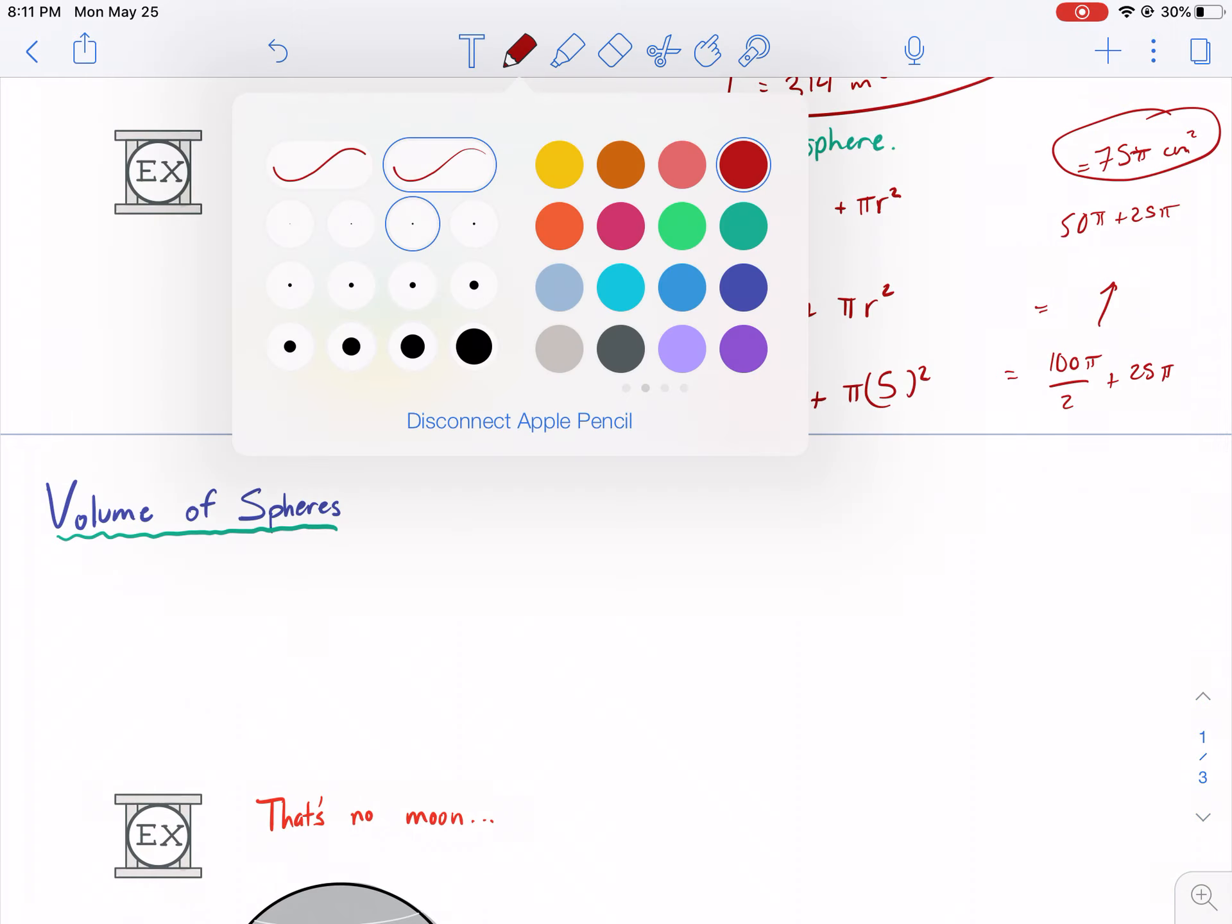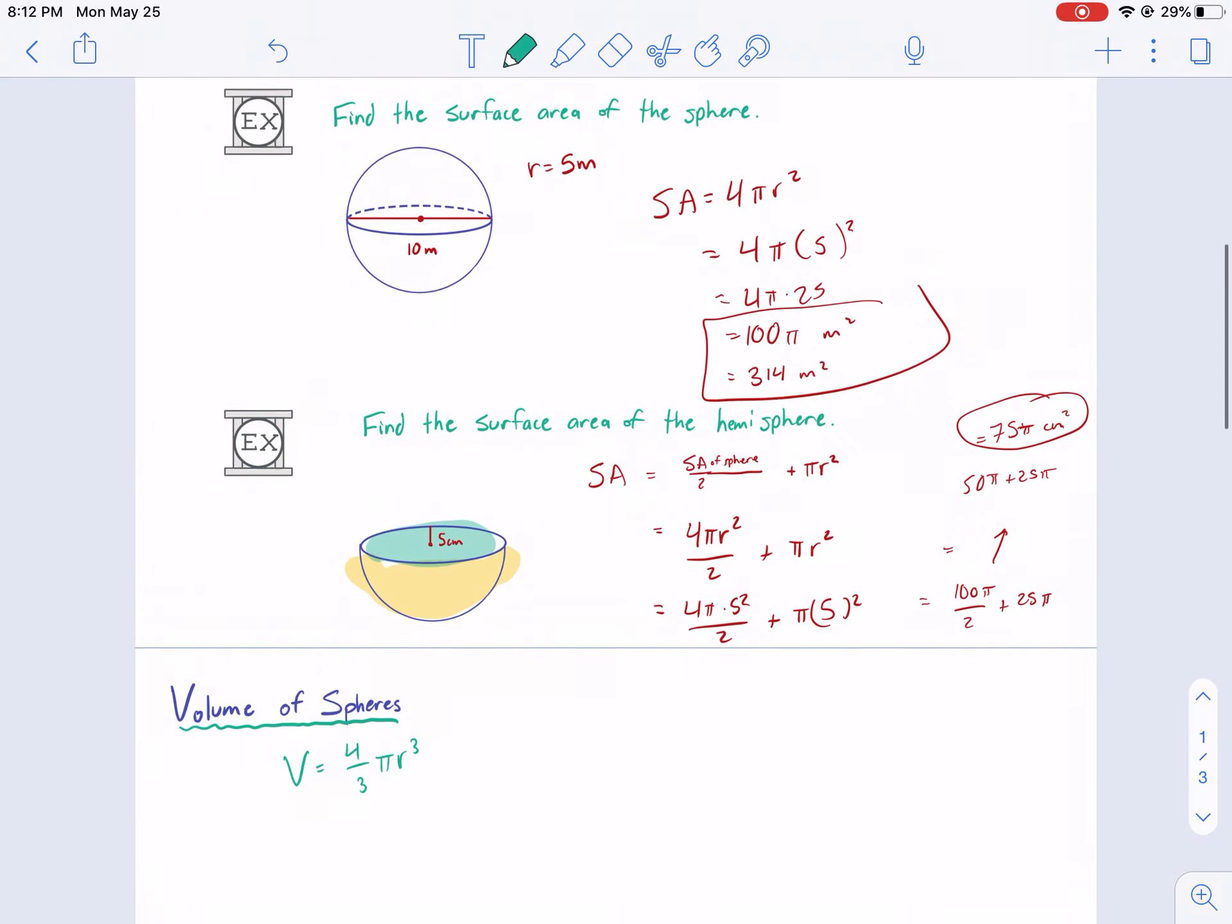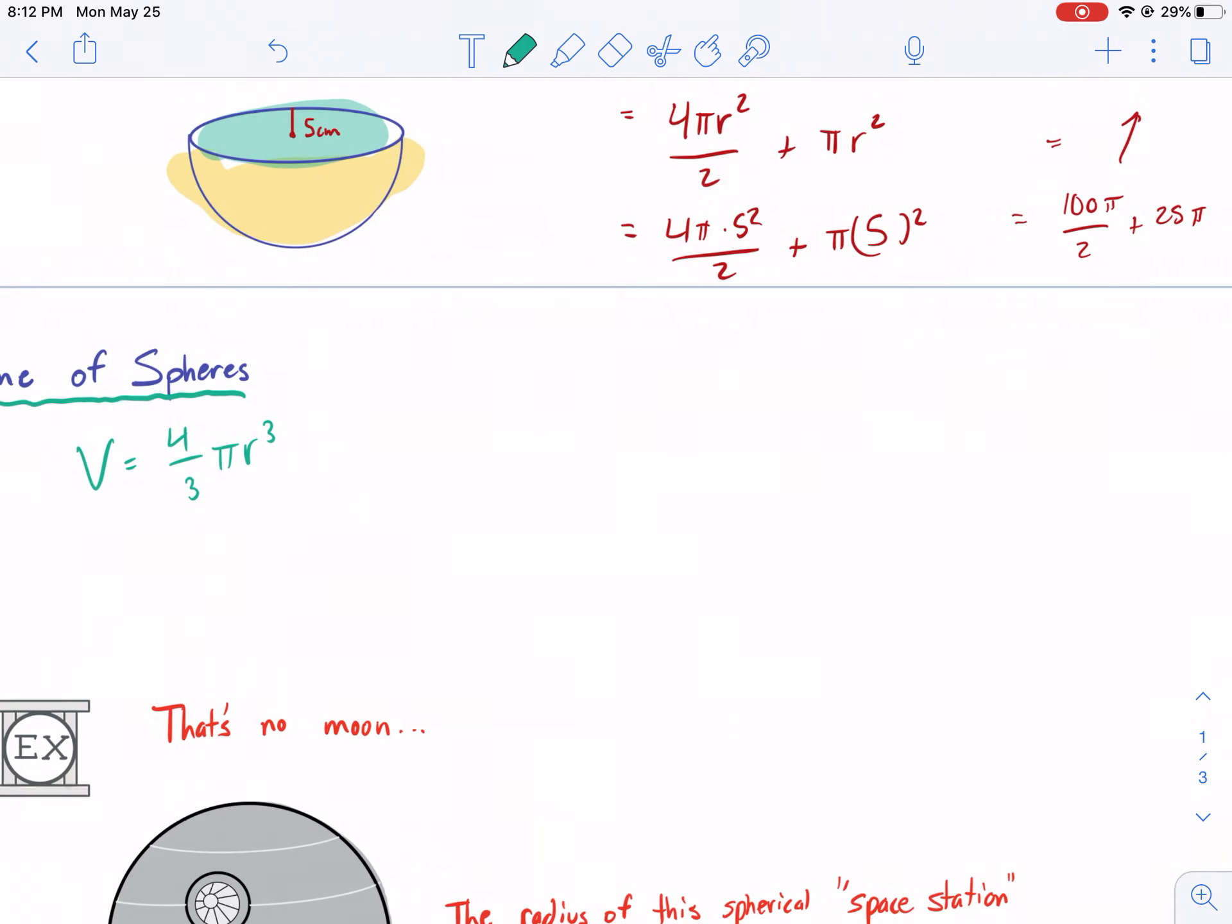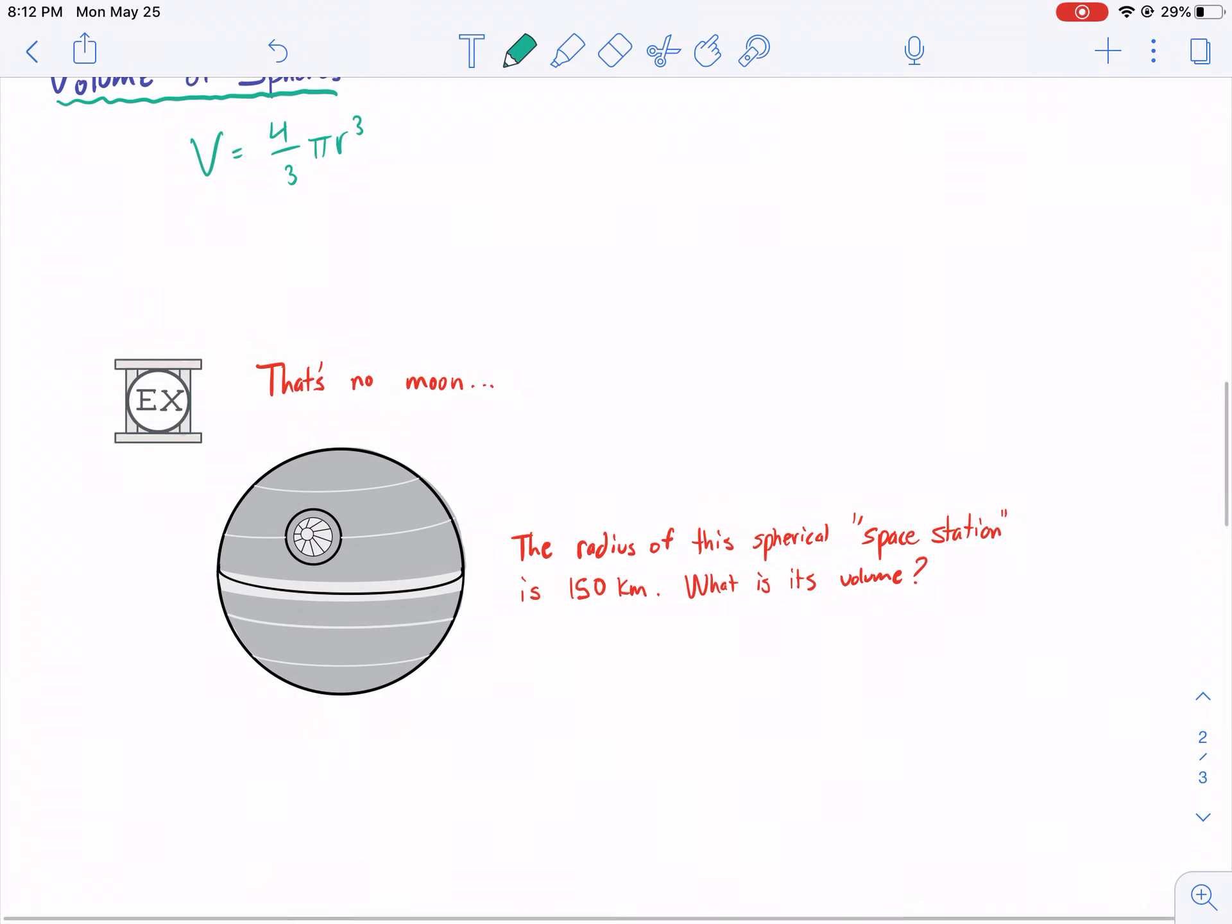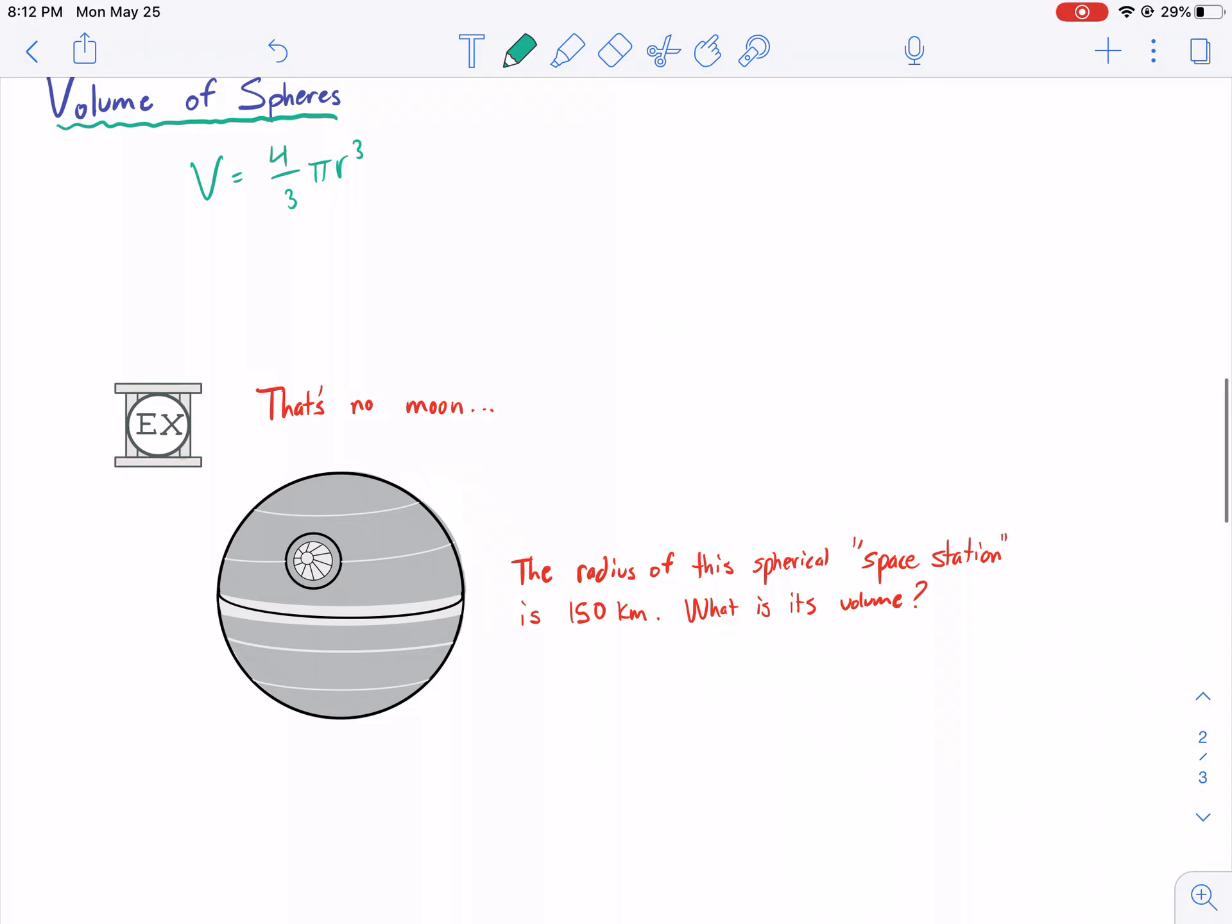Now volume of spheres. This is a little bit more tricky. Again, we're not going over the proof today. But it's equal to four-thirds pi r cubed. Because we're dealing with three-dimensional space, volume is how much space is occupied in three dimensions. We need to cube the radius this time. So, of course, we need to make sure we have a radius. We have everything that we need. So let's go ahead and get started on this problem.